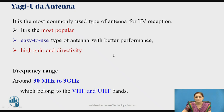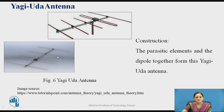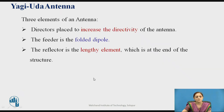The Yagi-Uda antenna is the most commonly used antenna for TV reception. It is a popular antenna used for decades, easy to use, with better performance, high gain, and directivity. Yagi-Uda antennas operate in the frequency range of around 30 megahertz to 3 gigahertz, belonging to the VHF and UHF bands. Its construction is a combination of parasitic elements and a dipole. The three main elements are the director, feeder, and reflector. The director increases directivity, the feeder is the folded dipole, and the reflector is the lengthy element at the end of the structure.